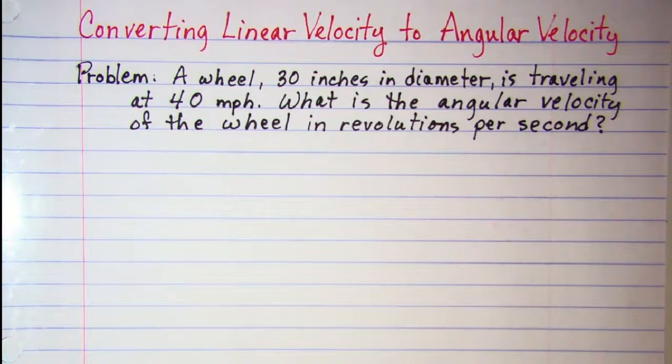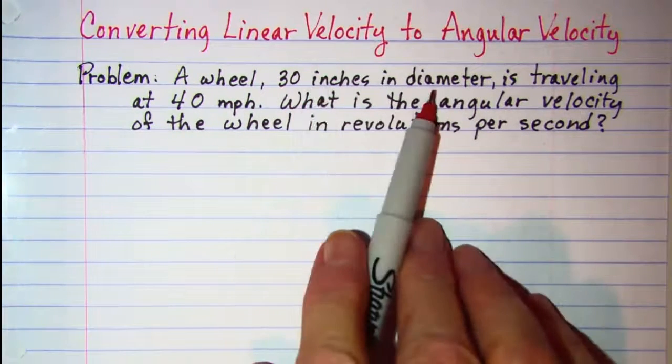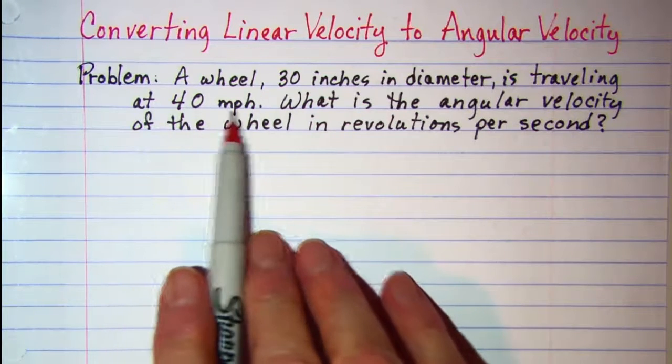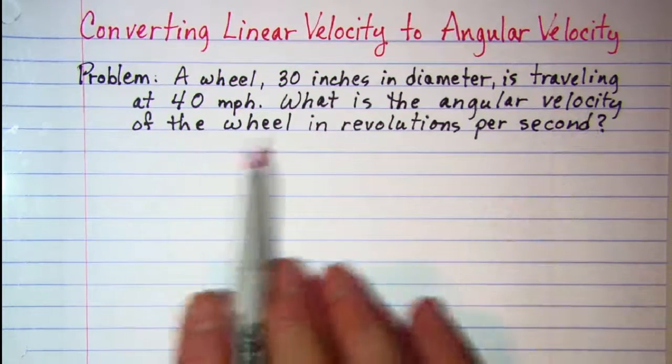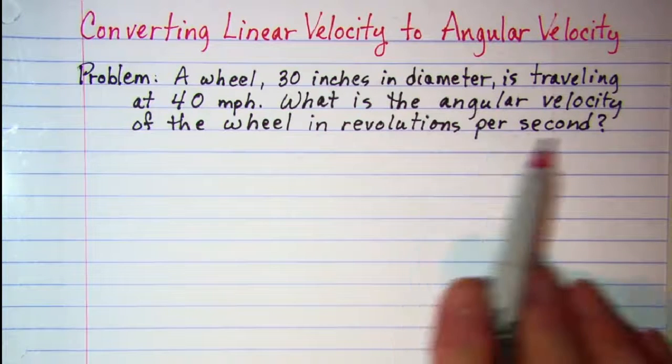The problem that we'll be looking at is a wheel 30 inches in diameter is traveling at 40 miles per hour. What is the angular velocity of the wheel in revolutions per second?